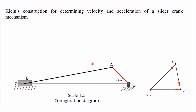This is a typical configuration diagram of a single slider crank chain. If OA is rotating in the clockwise direction, this is what you get as the velocity diagram: OA is the velocity of A with respect to O, AB is the velocity of B with respect to A, and OB is the velocity of the slider. In Klein's construction, we extend the connecting rod further and from O draw a line perpendicular to the path of motion of B. These two lines intersect at point M.